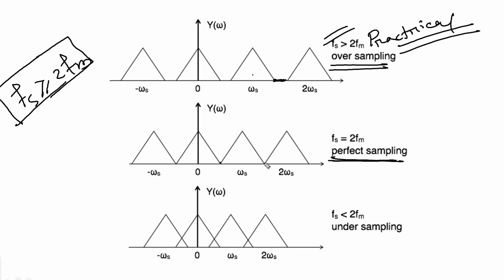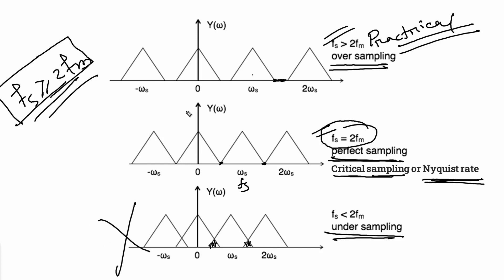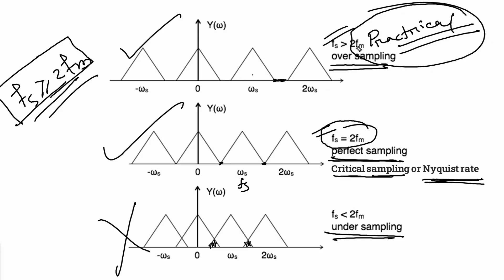When FS is less than 2Fm, that means the signal has distortion — this is called aliasing or direct overlap. We cannot recover the signal. So FS must be greater than 2Fm. Practically, over-sampling with FS greater than 2Fm is preferred to avoid aliasing. This concludes the sampling theorem and the spectrum discussion.